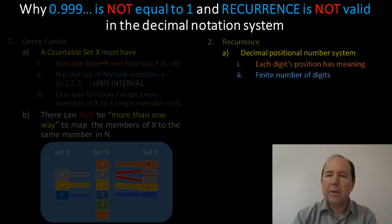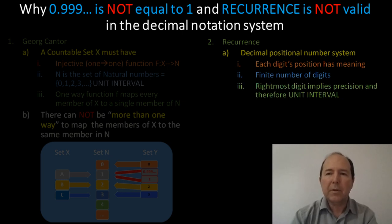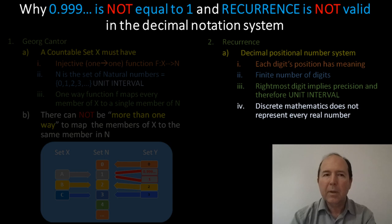And, if we have an infinite number of these digits, then we're not only saying something about the accuracy of our number, but we're also saying something about the unit interval. Because, as the accuracy increases, then the idea of ordinality dictates that the unit interval will become progressively smaller, and smaller, and smaller, until finally, at infinity, the unit interval becomes 0.